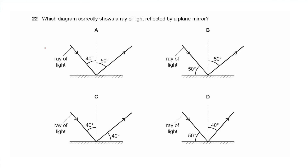Question 22 asks which diagram correctly shows a ray of light reflected by a plane mirror. The angle of incidence should equal the angle of reflection. In A they are not equal. In B, incidence is 40 and reflection is 50 — not equal. In C the angles don't match either. In D, 90 minus 50 gives 40 inside and 40 for the reflection angle, so the correct answer is D.